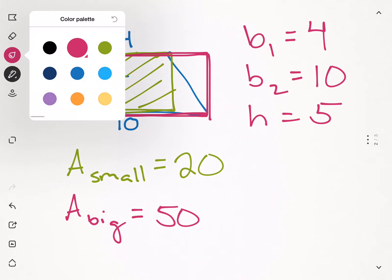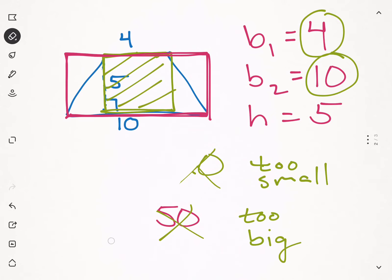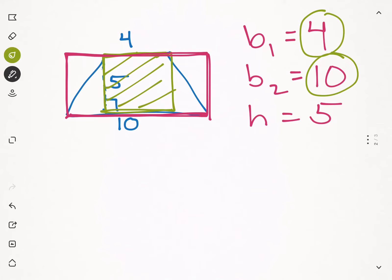So that green rectangle I drew was too small. So we need to find a base that's kind of in between those two bases. Do you know how we can find a number that's in between four and ten? No. Well, we're going to find the mean, the average of those.